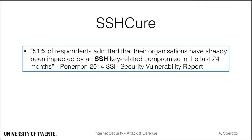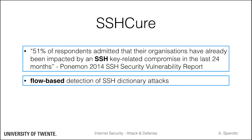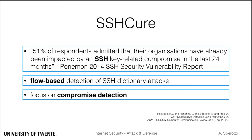Shikure performs detection in a completely flow-based fashion. Moreover, Shikure focuses on compromise detection, meaning that the goal is not to identify an attack, but to identify and report on a successful attack, which we call a compromise. Compromise detection is high on the wish list of security operators, because it lowers the number of alerts that need to be manually checked.